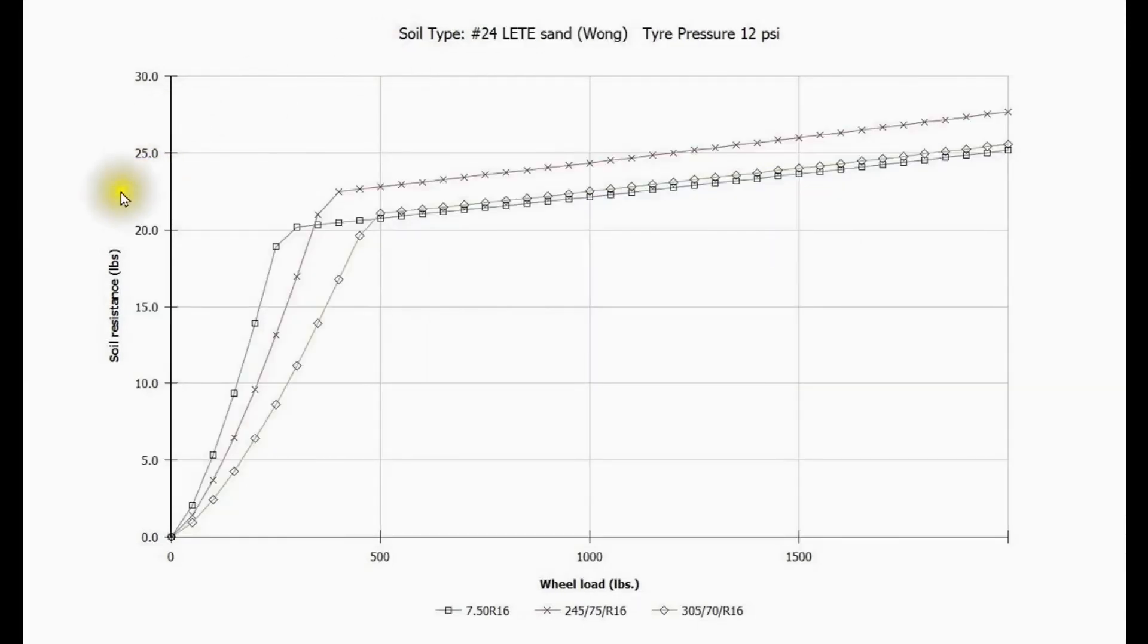We now compute the soil resistance for the firm sand. And we get the same general behavior but the point to note is that the numbers are very much lower because the sinkage is so much lower. These soil resistances don't include the internal rolling resistance of the tire itself.